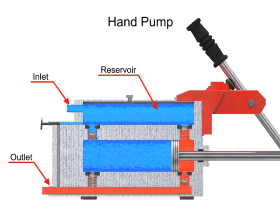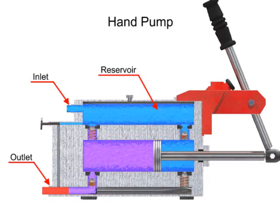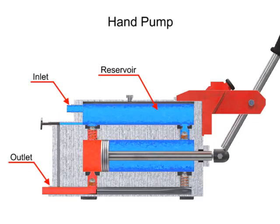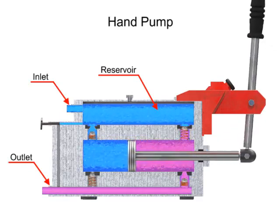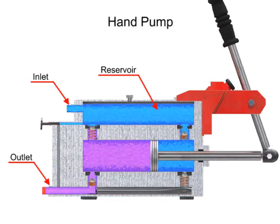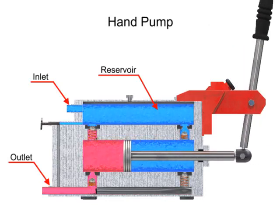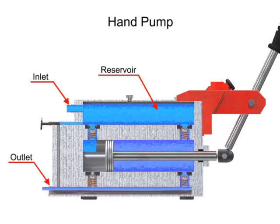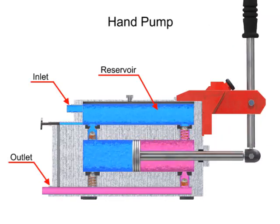Double acting hand pumps are more efficient, allowing fluid to both enter and discharge on both strokes of the piston. Moving the pump handle in either direction allows fluid to be drawn in from the reservoir and discharged via the outlet ports.